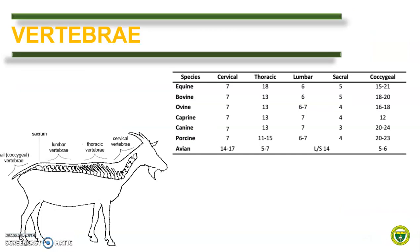As we recall, the vertebral column is divided into five segments: cervical, thoracic, lumbar, sacral, and caudal vertebrae. Here is a table showing the number of vertebrae per segment. It is important that you familiarize yourself with the vertebral formula.